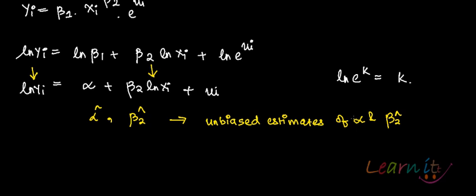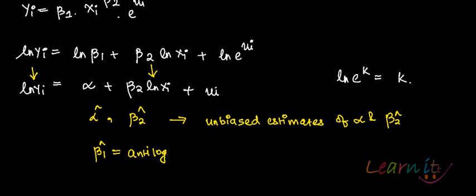Now, one important point: alpha hat is an unbiased estimate of alpha. However, since alpha is just log of beta 1, beta 1 hat — which is the antilog of alpha hat — would be a biased estimate of beta 1.